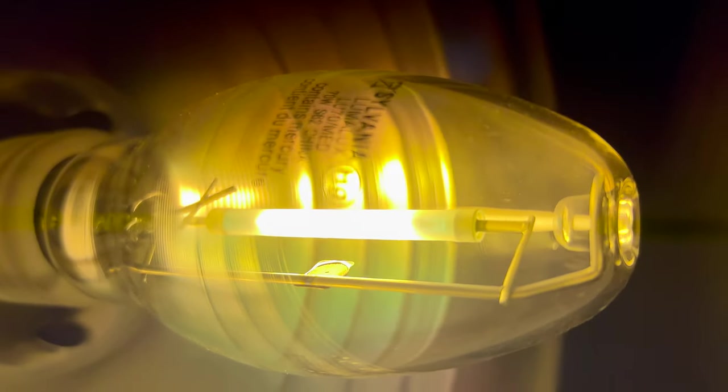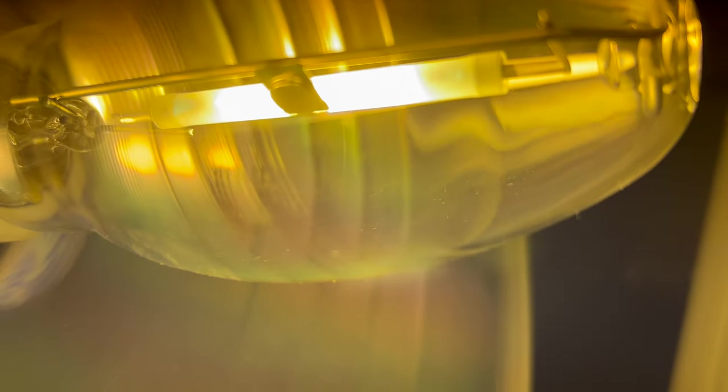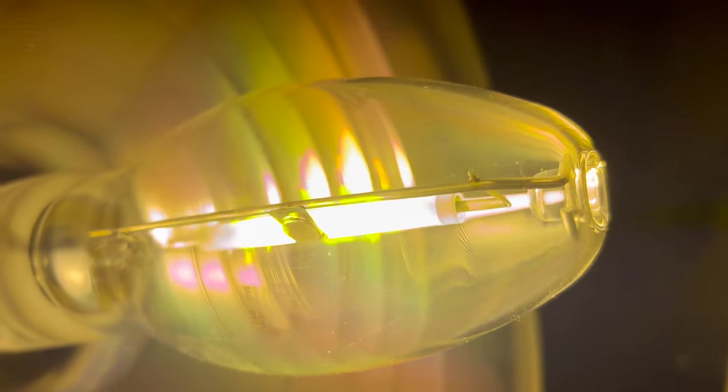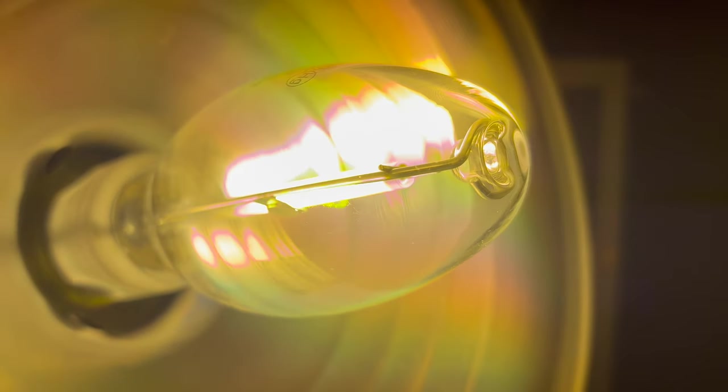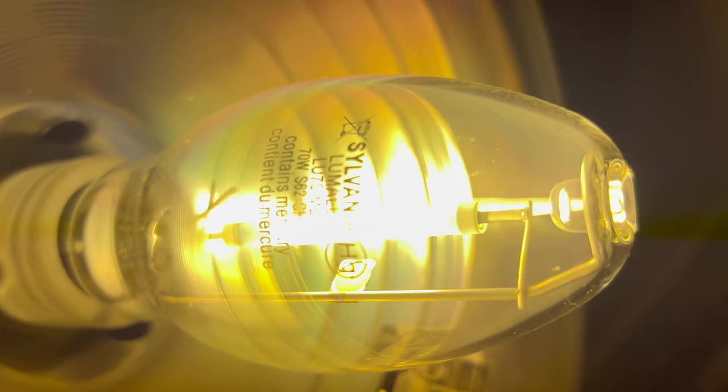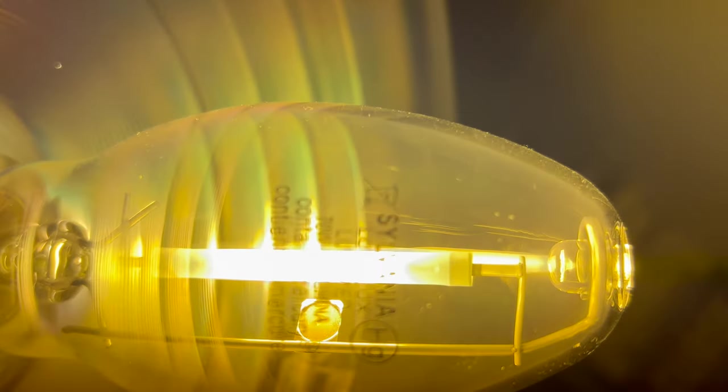Now we're just going to fly around with the camera here and take a close look at the bulb. That thing in the middle on the wire is called a getter, so as sodium leaks out, it sticks to the getter instead of depositing on the inside of the quartz glass envelope, and that maintains clarity of the external envelope, improving luminous efficiency over time.